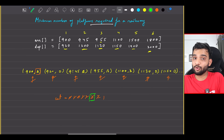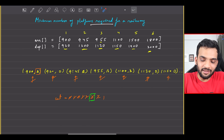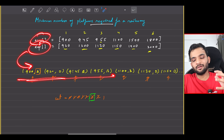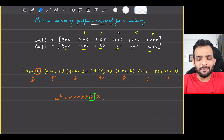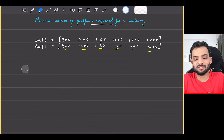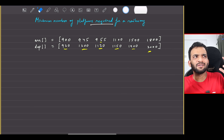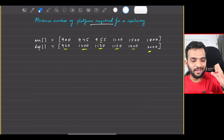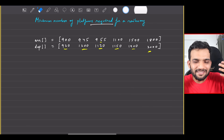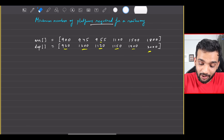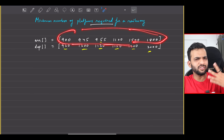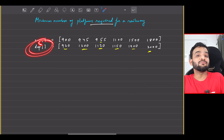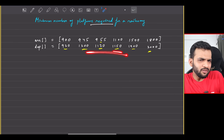I can follow this approach by combining arrival and departure into a third array, but that uses extra space. Alternatively, I can sort the arrival array separately and the departure array separately — I don't need them paired since I'm just tracking time events. The arrival array is already sorted; I sort the departure array independently.